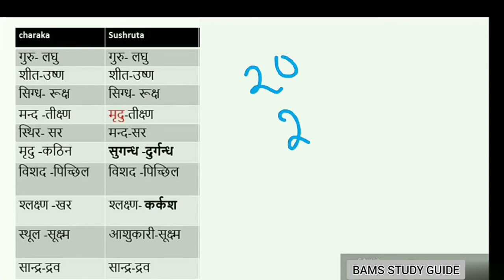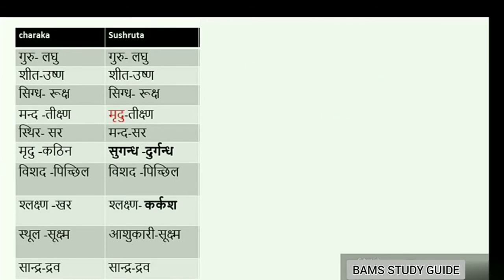Sushruta's Gunas are: Guru–Laghu, Shita–Ushna, Snigdha–Ruksha, Mridhu–Tikshna, Mandha–Sara, Sugandha–Durgandha, Vishada–Pichila, Slakshna–Karakasha, Ashukari–Sukshma, and Sandhra–Drava.